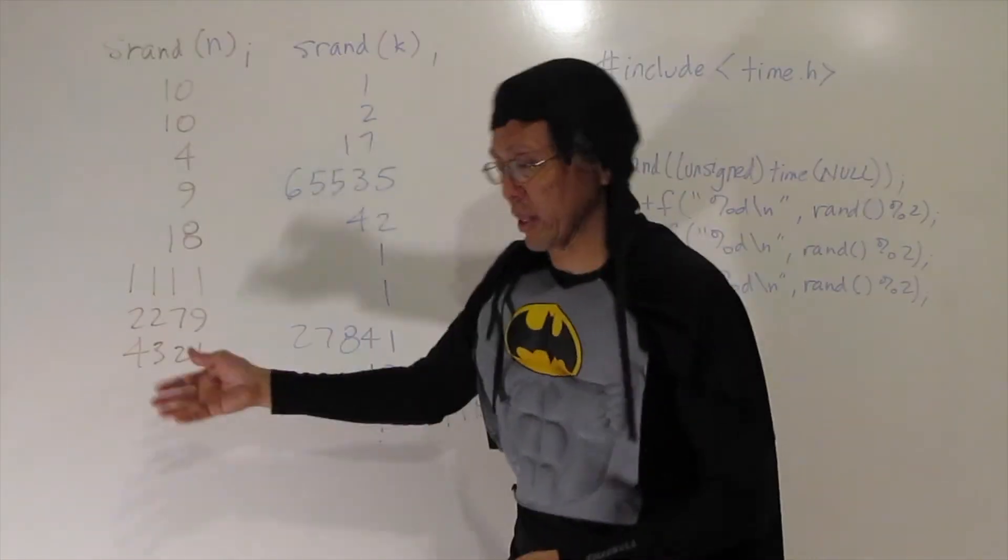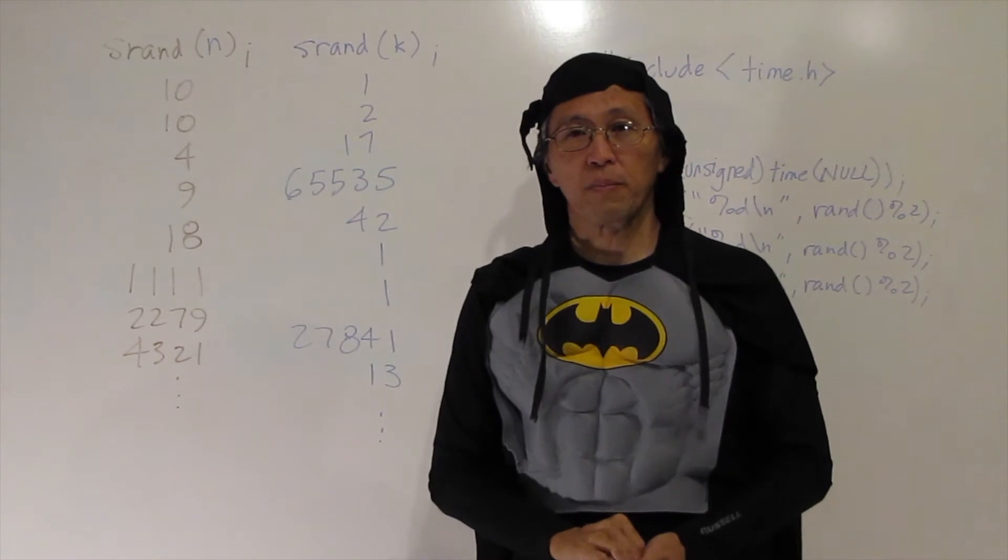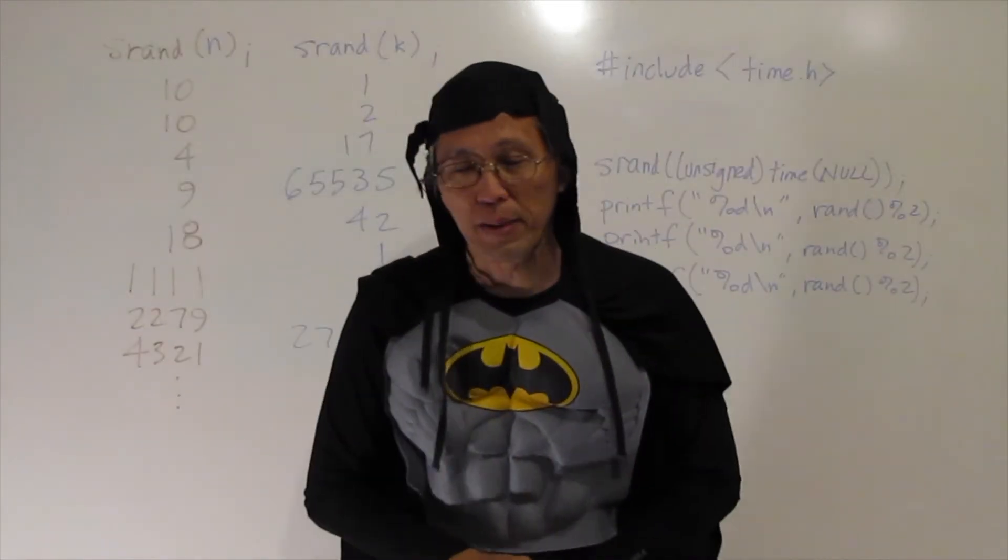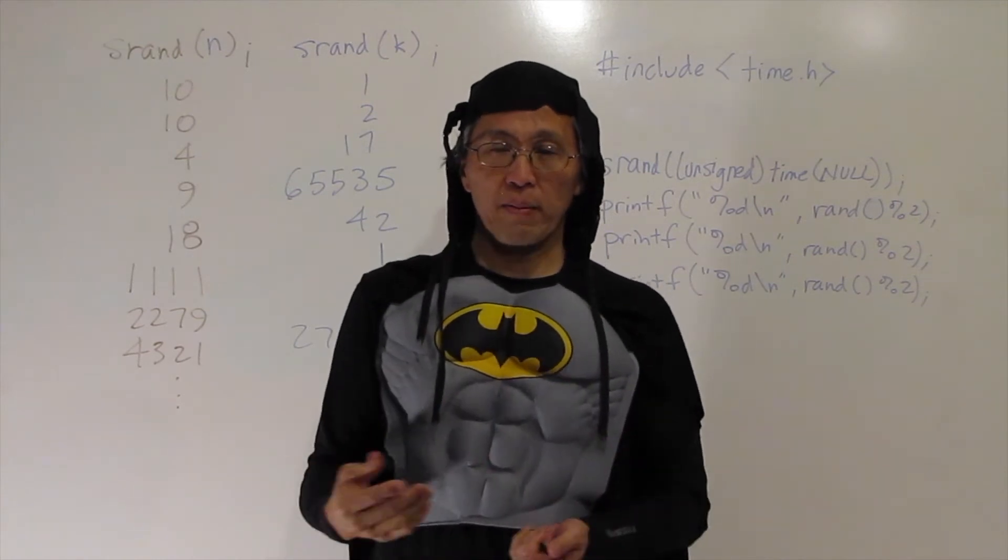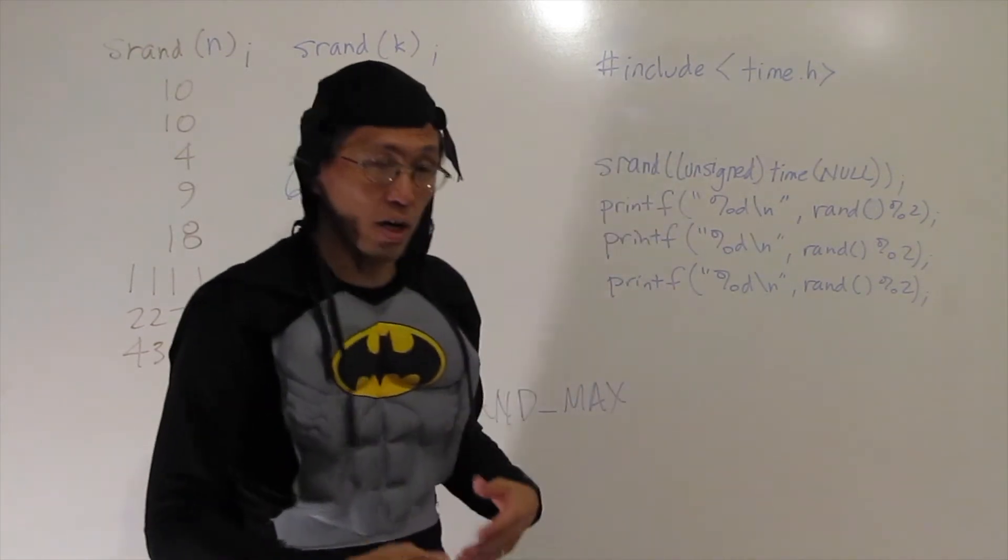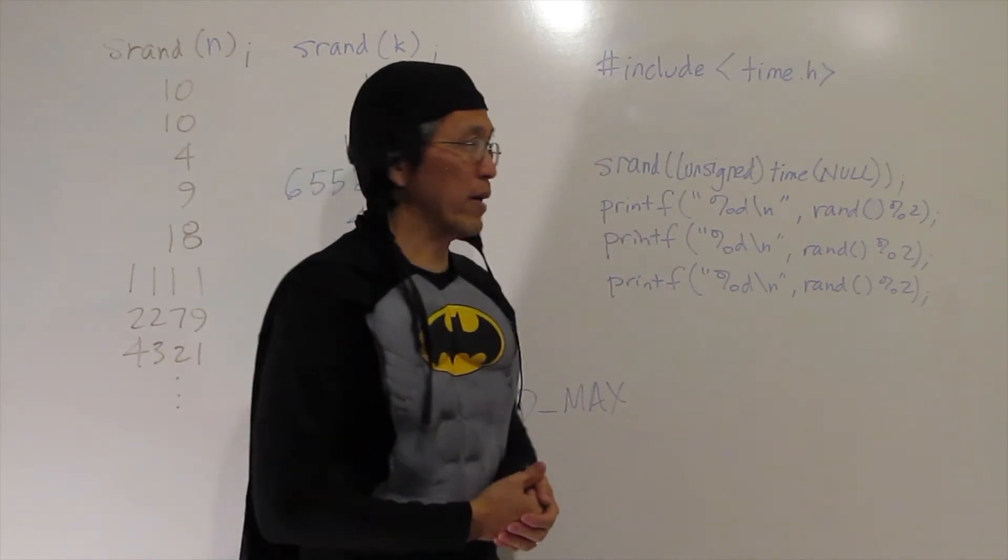Nothing that happened in the past determines what's going to happen in the future. Well, that can't really be true with a list of random numbers that the computer generated, but they want to make it seem like it is. So that's why they call them pseudo random numbers or fake random numbers.